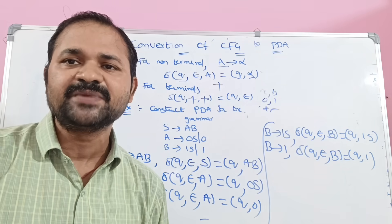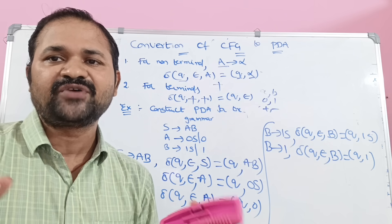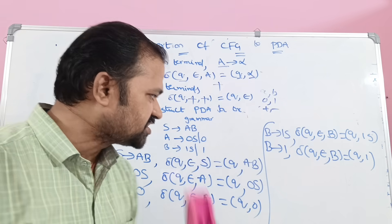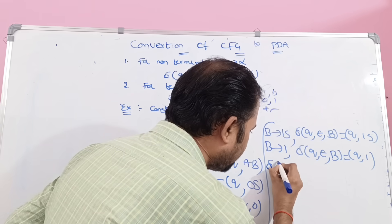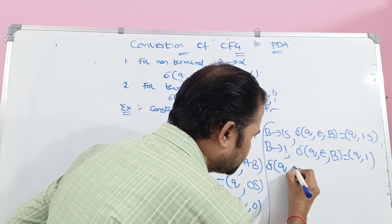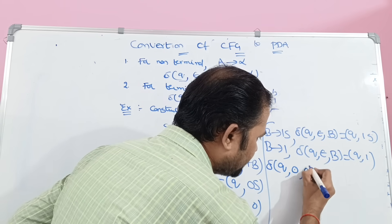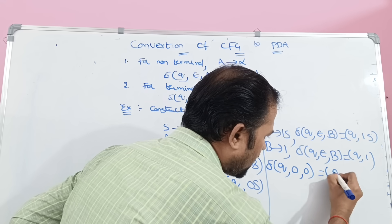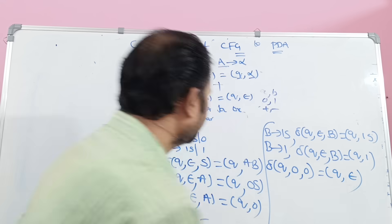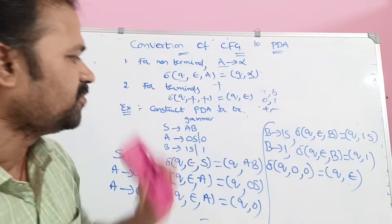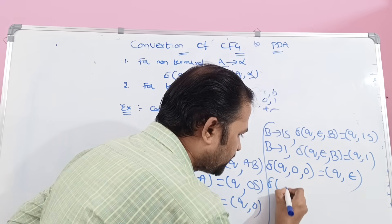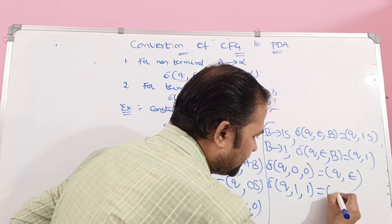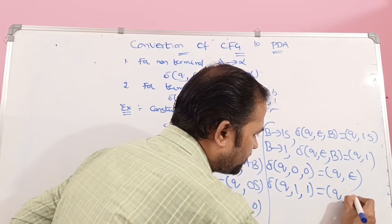Now, what are the terminal symbols here? 0 and 1. For 0, we write the transition function as delta of (Q, 0, 0) = (Q, epsilon). Next, for terminal symbol 1, delta of (Q, 1, 1) = (Q, epsilon).